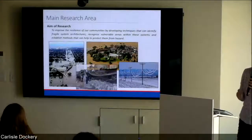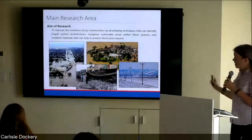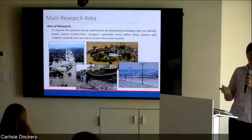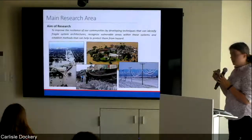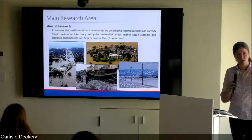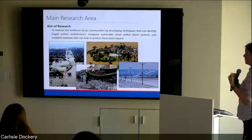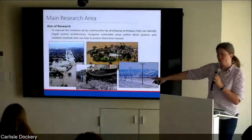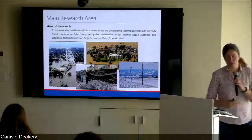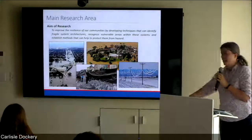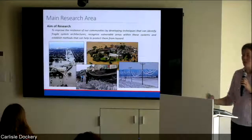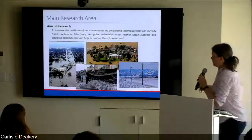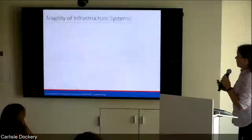My main research area is improving the resilience of our communities by looking at techniques that can identify fragile system architectures - in terms of topology, what's connected to what - recognize specific vulnerable areas within these systems, and establish methods that can protect them from a range of hazards. I've looked at rail, electricity networks, roads, air traffic networks, and hazards including flooding, winds, ash clouds - anything with a spatial component. I've also done a little bit on terrorist and targeted attacks.